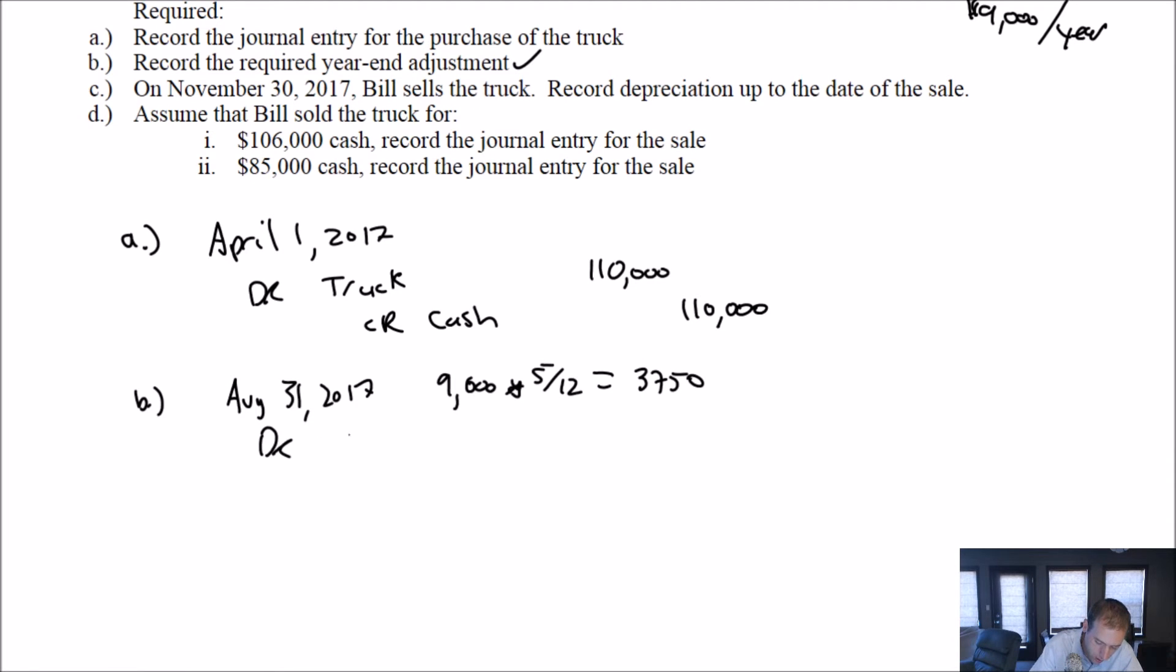So we debit depreciation expense, and we credit accumulated depreciation on our truck. This is the journal entry we learned in Chapter 3. At the end of our fiscal year, our truck is worth $110,000 minus $3,750, which equals $106,250. That's our truck's net book value that we'll show on our fiscal year-end financial statements.